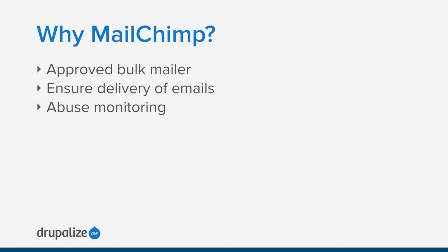MailChimp has some tools that are capable of abuse monitoring. It uses a system of monitors that, anytime you send an email out to your list, scans the content of the email to make sure that you and your team aren't doing anything that could be flagged as spammy or maybe even illegal. Finally, in my experience, MailChimp can help prevent embarrassing mistakes. You could maintain a mailing list in a text file and send email through Gmail, but it's really easy to mix things up — like putting everybody's address in the CC field instead of the BCC field. MailChimp just makes that a lot safer.